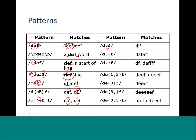Curly braces with numbers allow specifying exact repetition counts. For example, `{1,3}` means the preceding character can occur one to three times. You can also specify just a single number in curly braces to match exactly that many occurrences. A pattern like `{3,}` with an empty upper bound means three or more occurrences. And `{0,3}` matches zero to three occurrences of the preceding character.